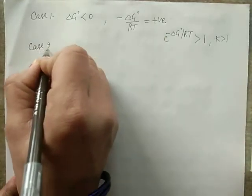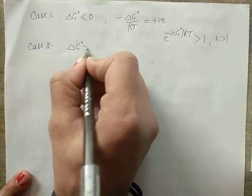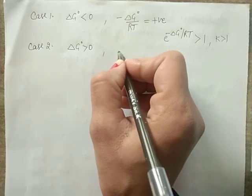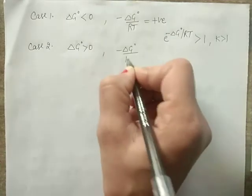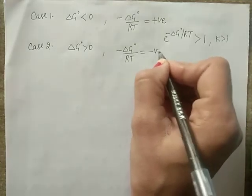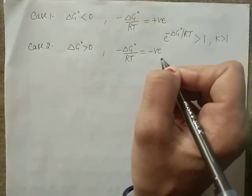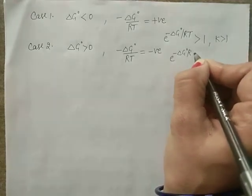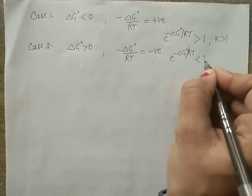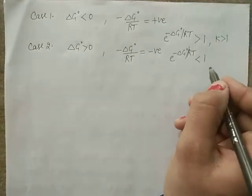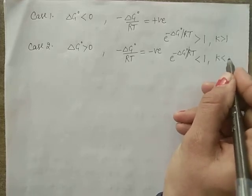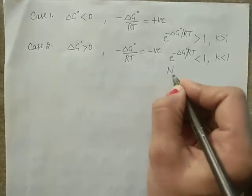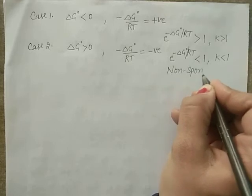Case 2: If ΔG° is greater than 0, it means −ΔG°/RT is negative, so e^(−ΔG°/RT) is less than 1. It means K value is less than 1, and the reaction is non-spontaneous in the forward direction.